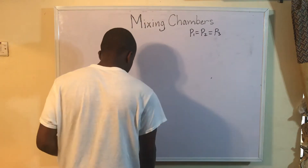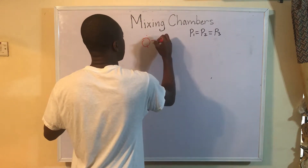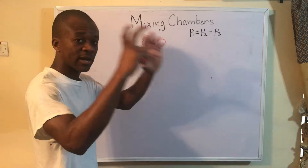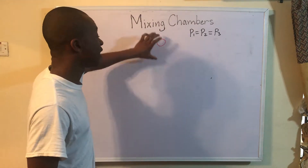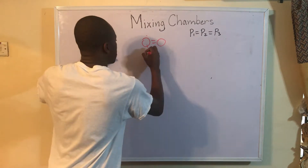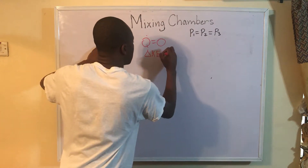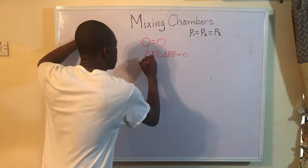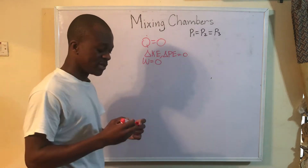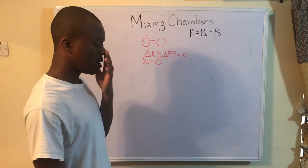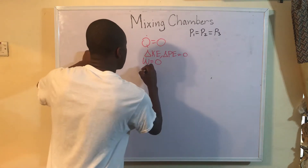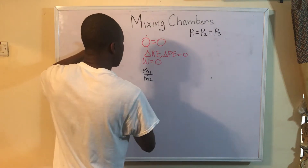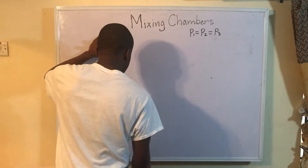There are a few other things to note when dealing with mixing chambers. First, Q̇ is equal to zero — we're dealing with an adiabatic device, so we assume no heat flow in or out of the mixing chamber. It's also important to note that there is no change in KE or PE, so we don't have to worry about those. Additionally, Ẇ is zero — there's no work done with a mixing chamber. A lot of the time you're going to be asked to determine the ratio of ṁ1 to ṁ2, so keep those assumptions in mind.